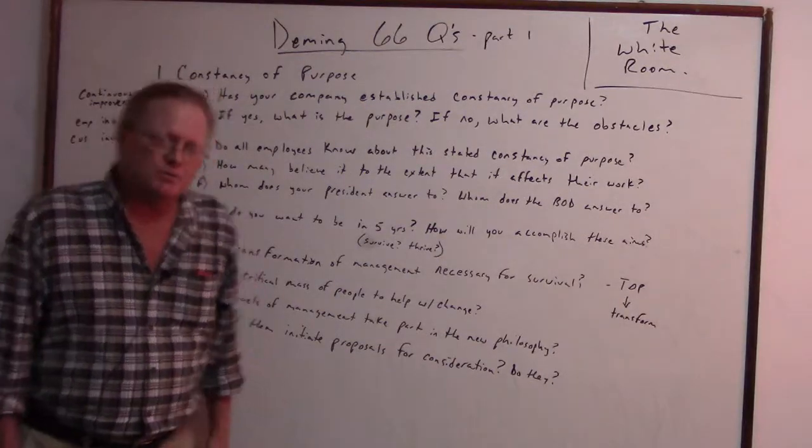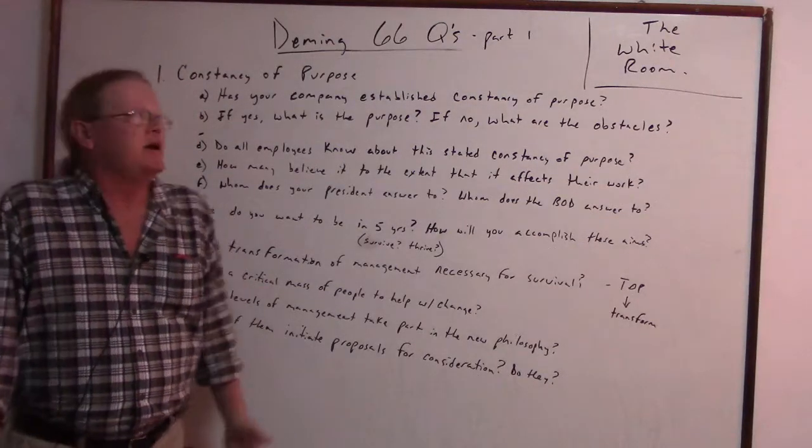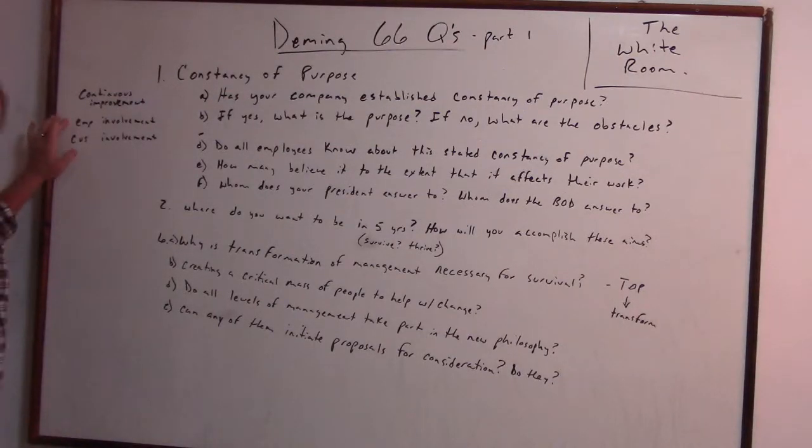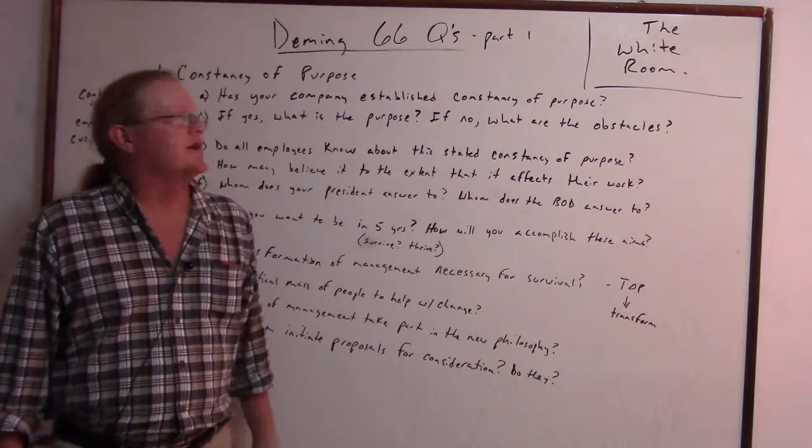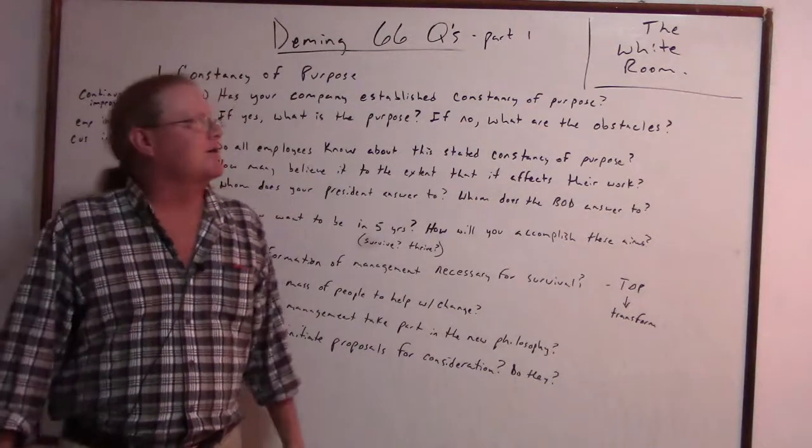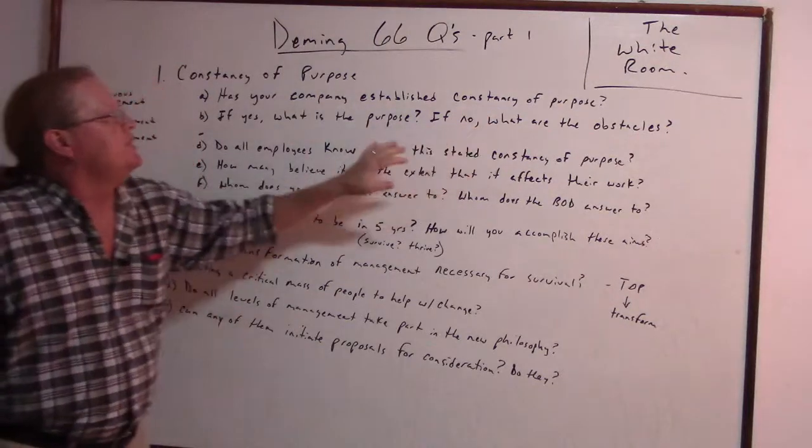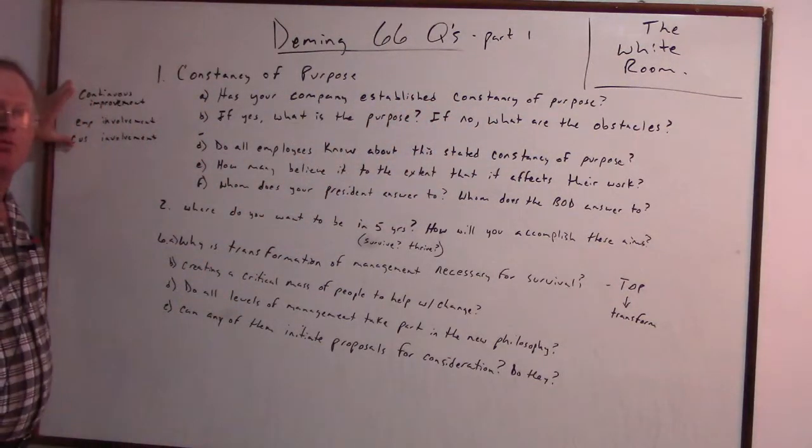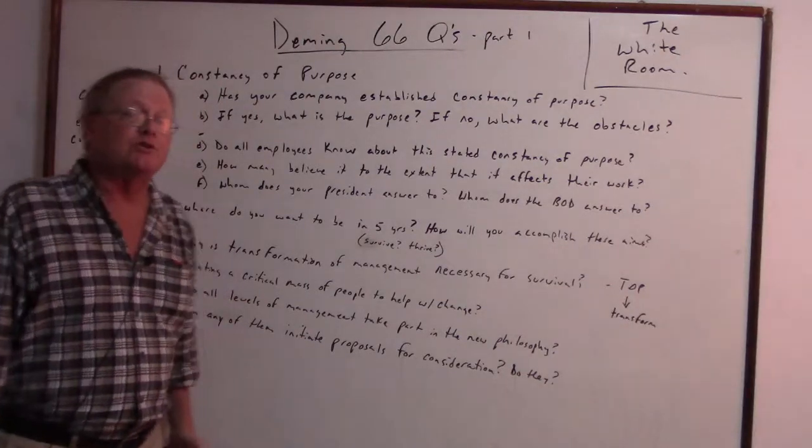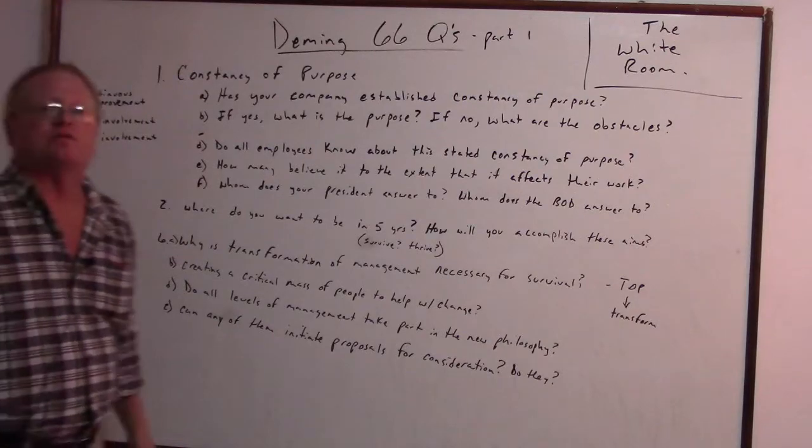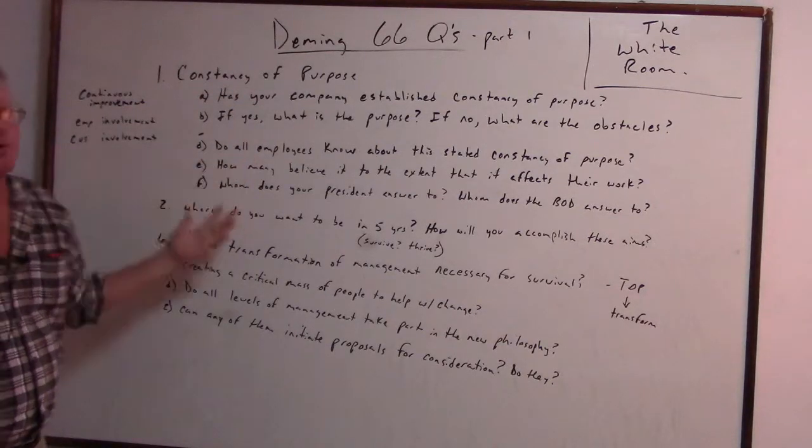It would be virtually impossible for them to know that constancy of purpose is continuous improvement to stay in business, provide jobs, and serve society with the involvement of employees and customers. So you might get all kinds of answers for this like to stay in business, to make money, to be profitable, things like that. When you get these answers you might have to go back and explain. We are here to help the company explain that constancy of purpose, maybe they should consider continuous improvement getting the employees involved and getting the customers involved.